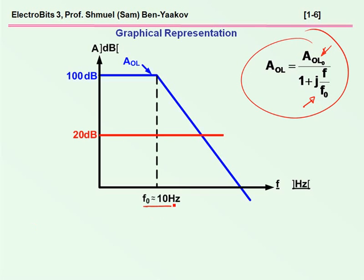Next, we draw 1 over beta. It is drawn here for the private case of 20 dB, assuming that in this particular case beta is frequency independent. It doesn't have to be, but for simplicity we'll start with that. So we have now a description of 1 over beta in graphical form.